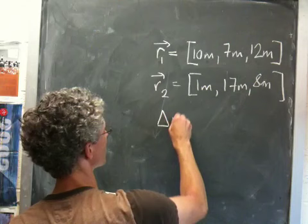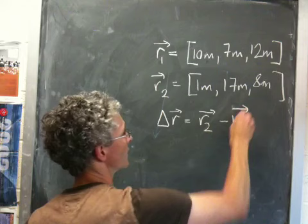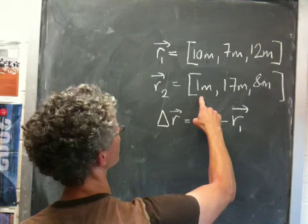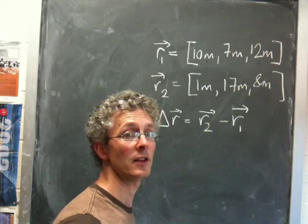And we're asked what its displacement is. Its displacement is the final position minus the initial position, which is the same as the change of position. So the displacement is just r2 minus r1. And remember, the whole reason for splitting our vector into three components is so we can treat each component separately.